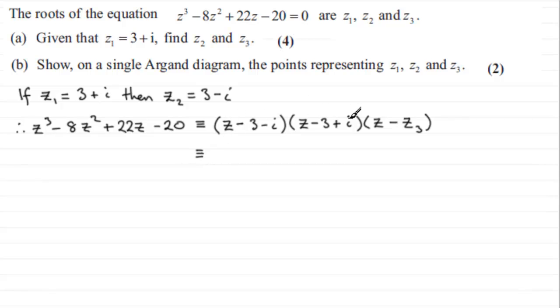So if we do z times each of the terms here, we get z times z, which is z squared. And then z times minus 3 is minus 3z. And z times plus i is plus iz. Now we'll move on to minus 3. Minus 3 times z is minus 3z. And then minus 3 times minus 3 is plus 9. And minus 3 times plus i is minus 3i. And finally, we need to do minus i times z. So that's going to be minus iz. Minus i times minus 3 is plus 3i. And then minus i times plus i is minus i squared. But i squared is minus 1. So you've got minus minus 1, which is plus 1. And all of this is being multiplied by z minus z3.